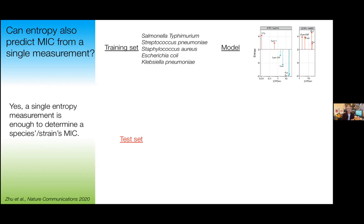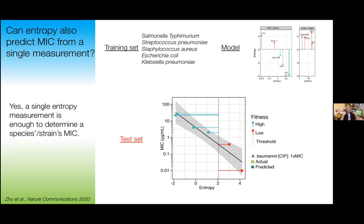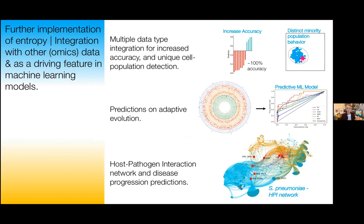This suggests that entropy can say more than just whether a bacterium is sensitive or resistant — it can accurately quantify the exact level of resistance. We built a model that translates entropy into a bacterium's MIC. To test this, we measured the entropy in two strains of Acinetobacter baumannii — a species not used in building the model — and tried to fit the entropy level to the MIC, resulting in an exact prediction of each strain's actual level of resistance. These models can be further improved to 100% accuracy with integration of more data. Additionally, we are using entropy as a fundamental building block to make models predicting the presence of tolerance phenotypes, predicting adaptive evolution, and analyzing host-pathogen interaction networks to predict disease outcome and progression in vivo.